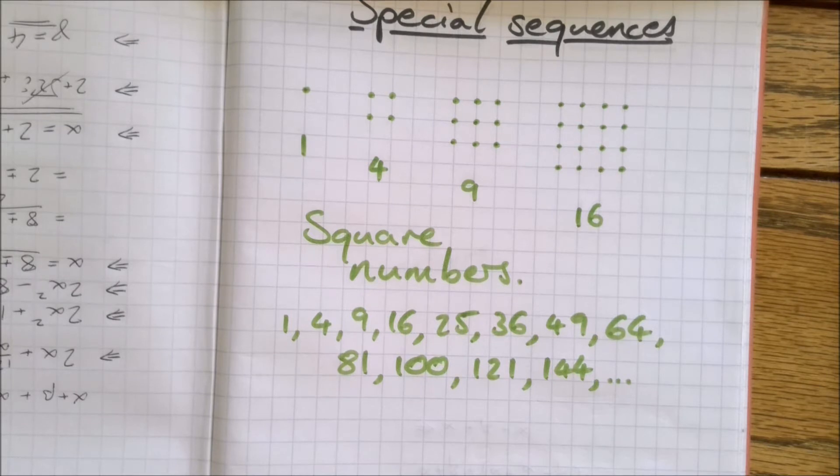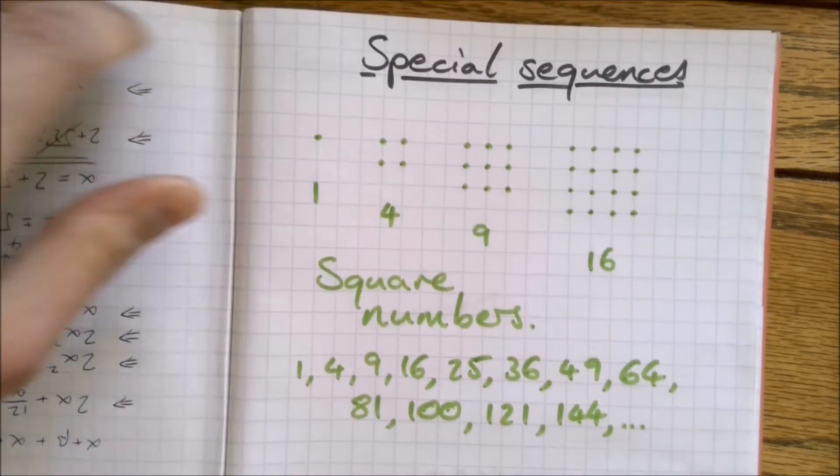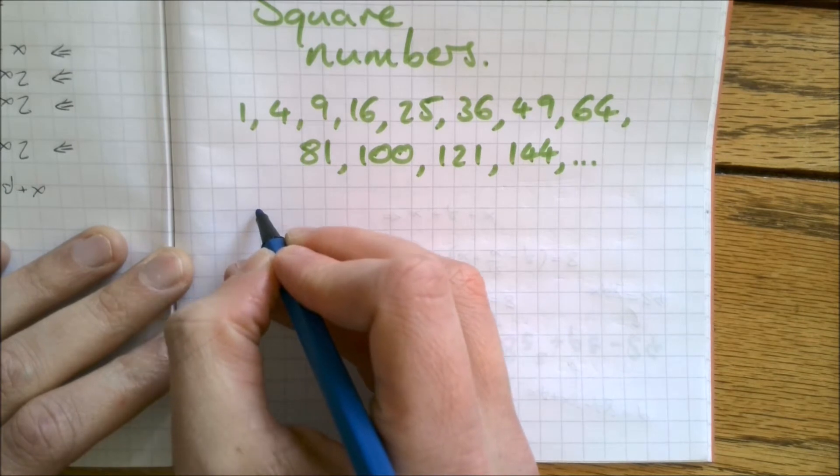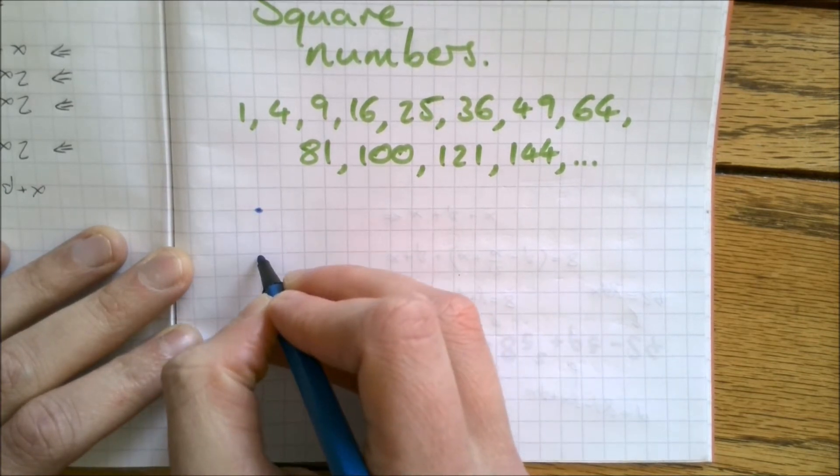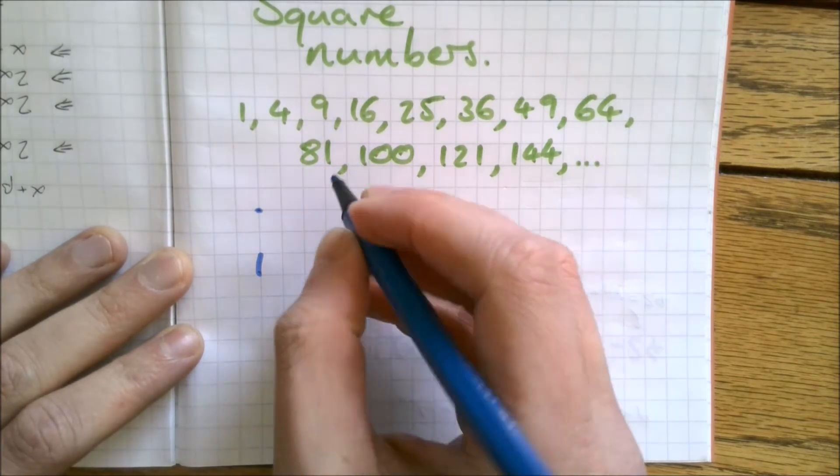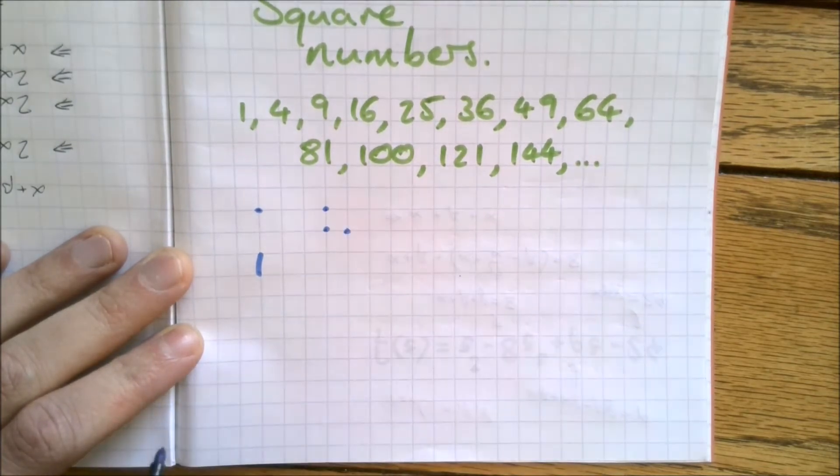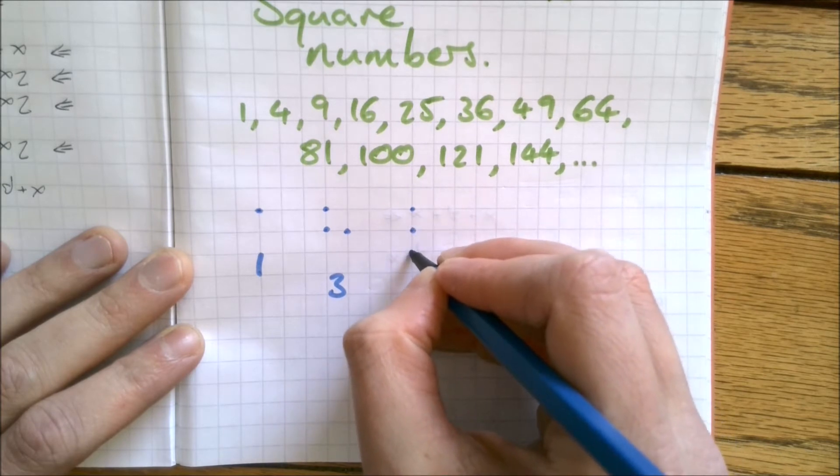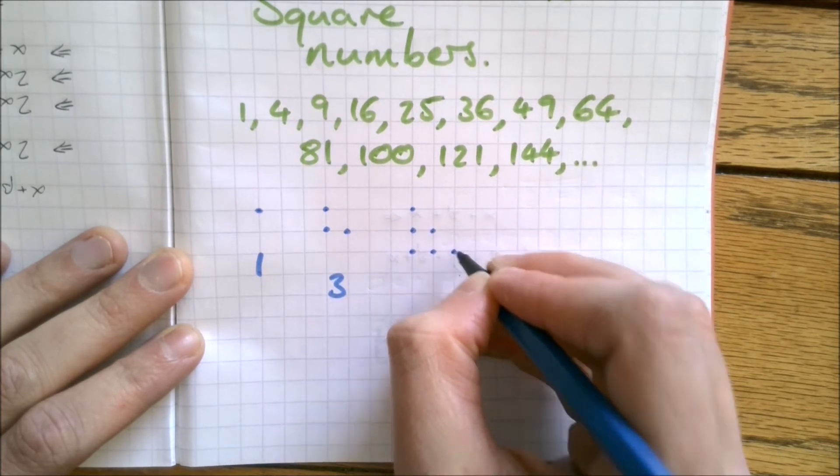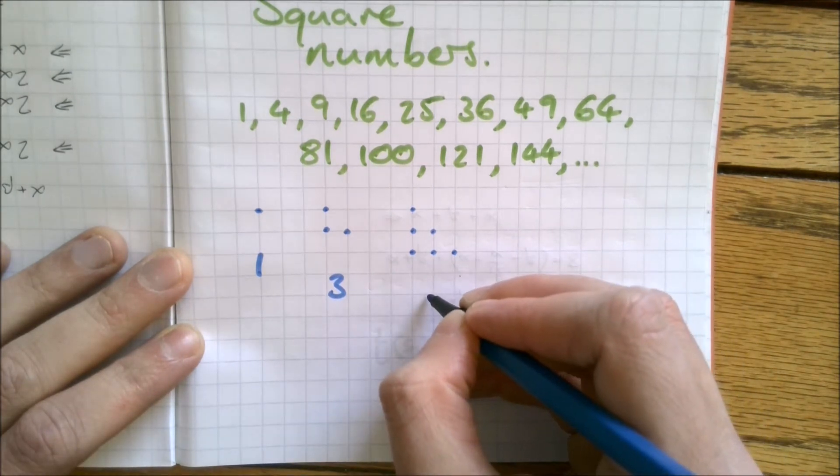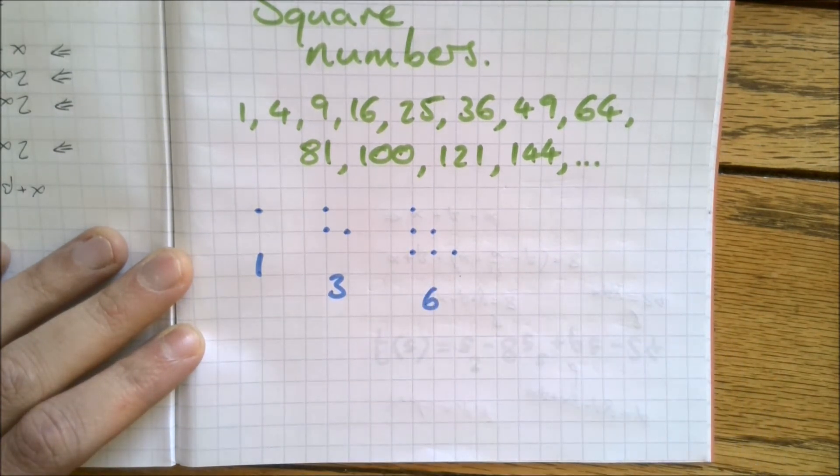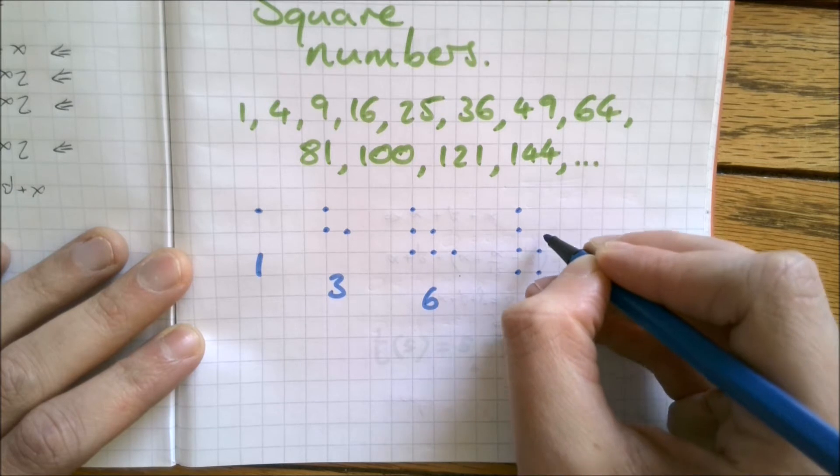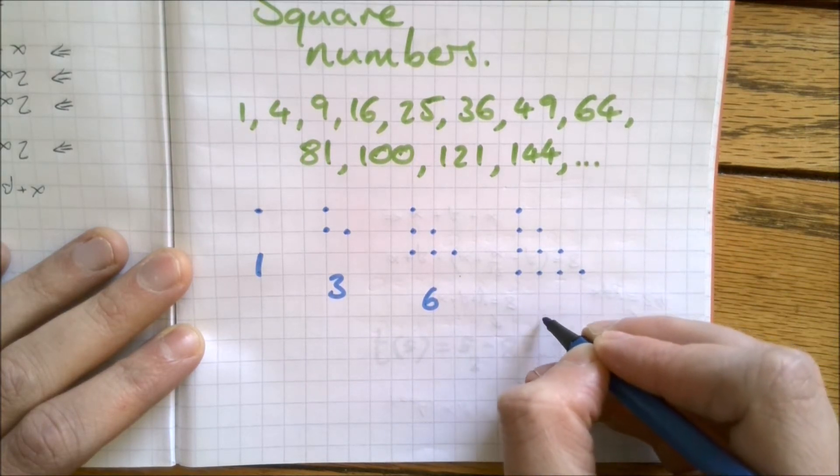Next special sequence. I'm going to get a different colored pen and scroll down. Let's take a look. This next sequence also starts with the number one. Look at the next one. The next one is 3. The next one is 6.